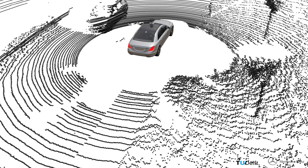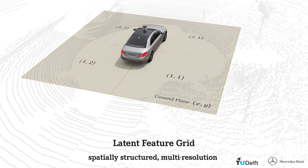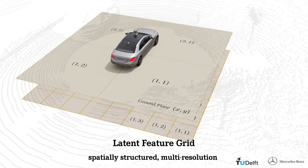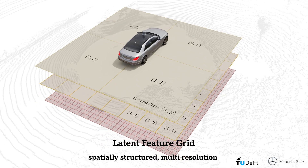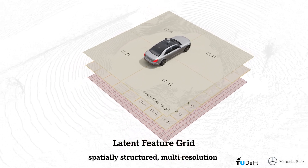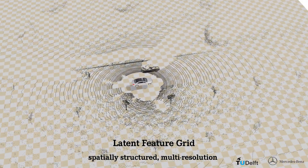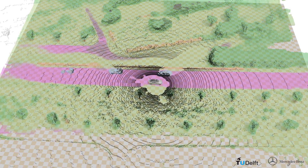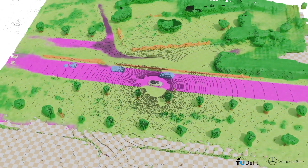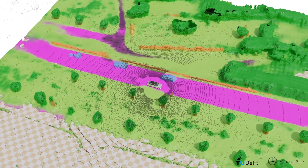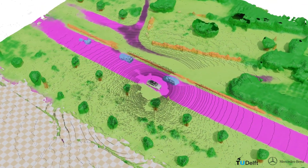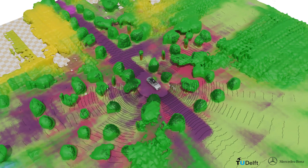We encode a single LiDAR scan into a multi-resolution feature grid that spans the 2D ground plane of the surrounding scene. We produce a dense continuous 3D scene representation which contains both semantic and spatial information.